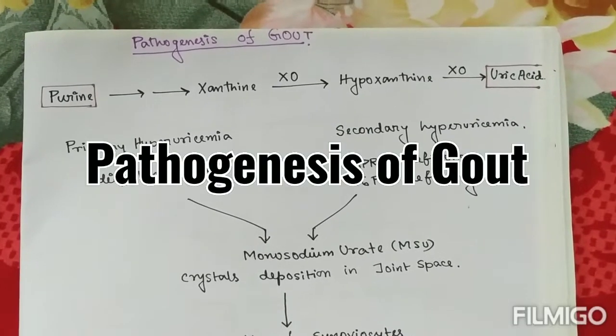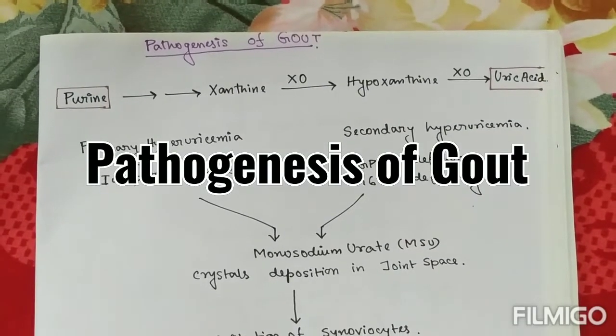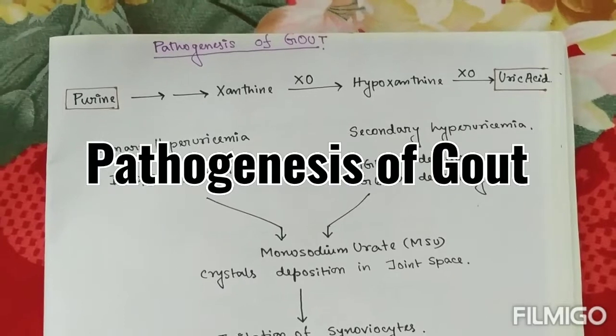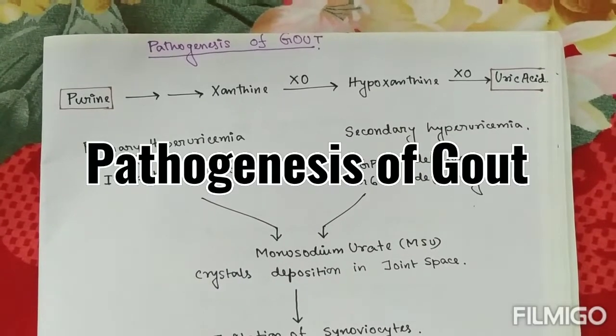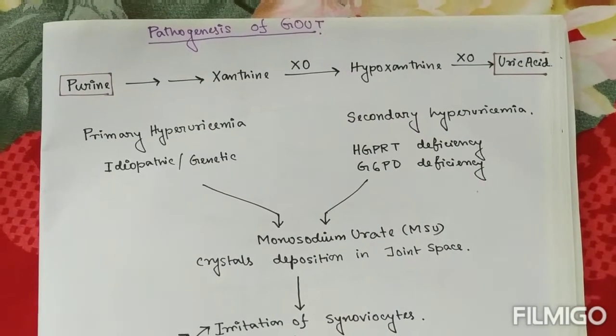Hello everyone. Today our topic of revision is pathogenesis of gout, and the main underlying metabolic condition is hyperuricemia.